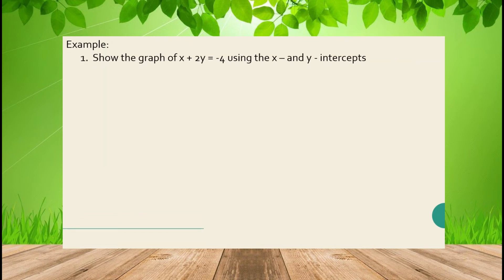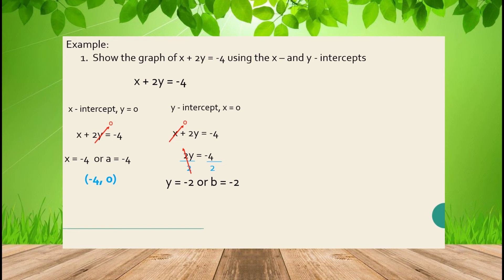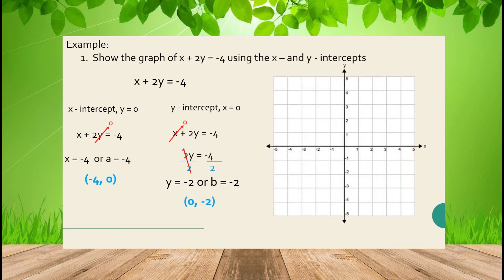Show the graph of x + 2y = -4 using the x and y-intercepts. To find the x-intercept, set y = 0 and cancel the y term: the x-intercept is -4. To find the y-intercept, set x = 0 and cancel the x term, then solve for y: the y-intercept is -2. Then you can graph — that is the line of the equation x + 2y = -4.